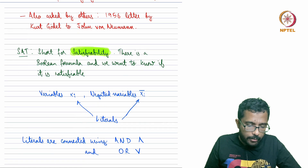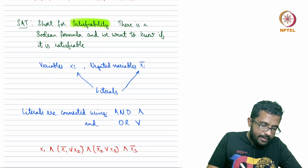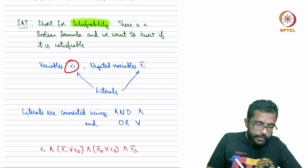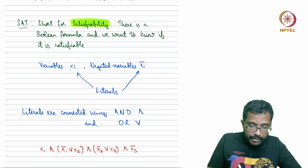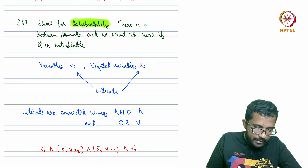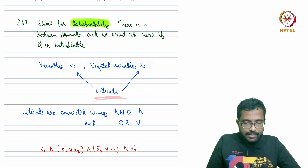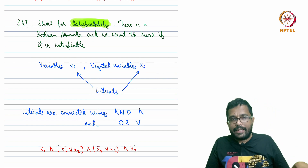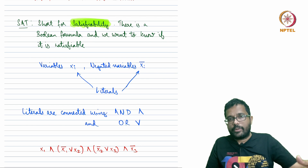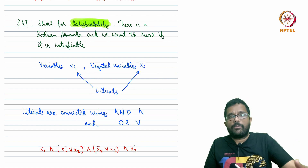What does the Boolean formula contain? It contains variables x1, x2, x3 and also negated variables x1 complement, x2 complement. Both variables and negated variables are together called literals — so literals include x1, x2, x3 and x1 complement, x2 complement, and so on.